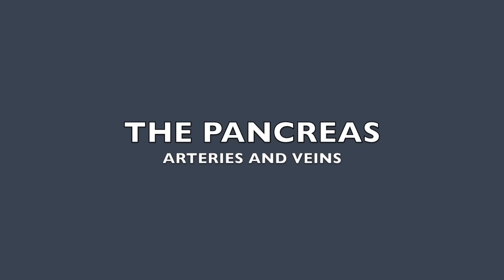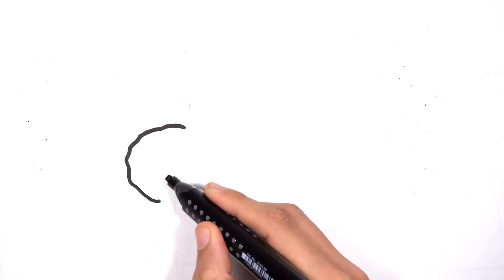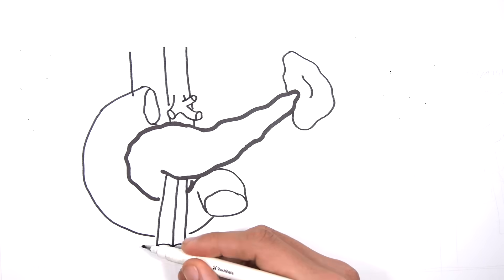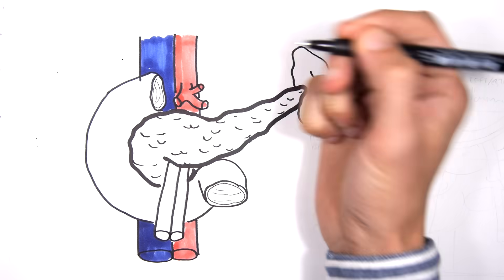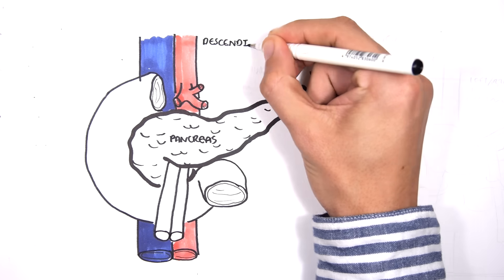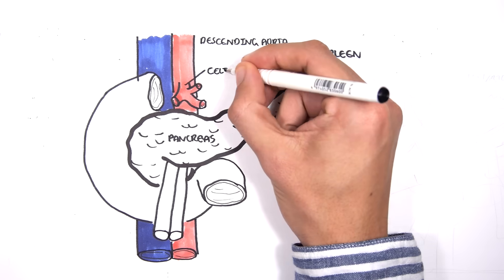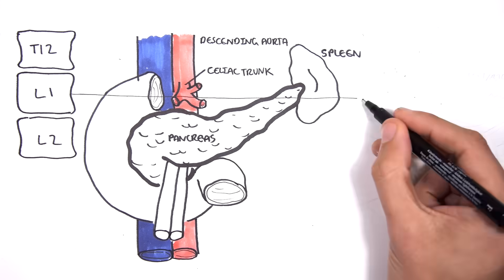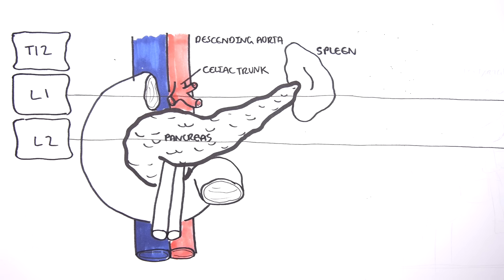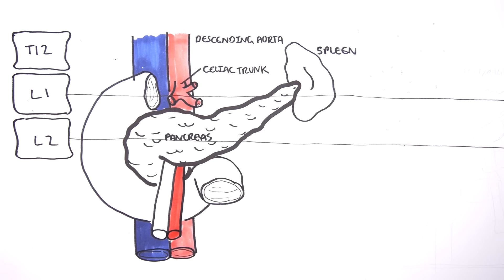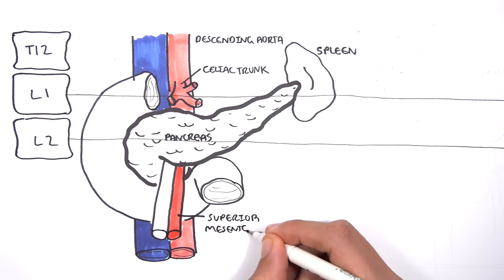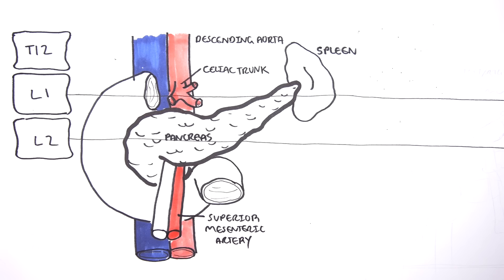Let's focus on the arteries and veins of the pancreas. The pancreas sits in front of the inferior vena cava and the descending aorta. The tail is near the spleen and the head is next to the duodenum. The celiac trunk branches from the descending aorta at approximately T12–L1. At about L2, the superior mesenteric artery also branches from the aorta, running behind the pancreas and over the duodenum.